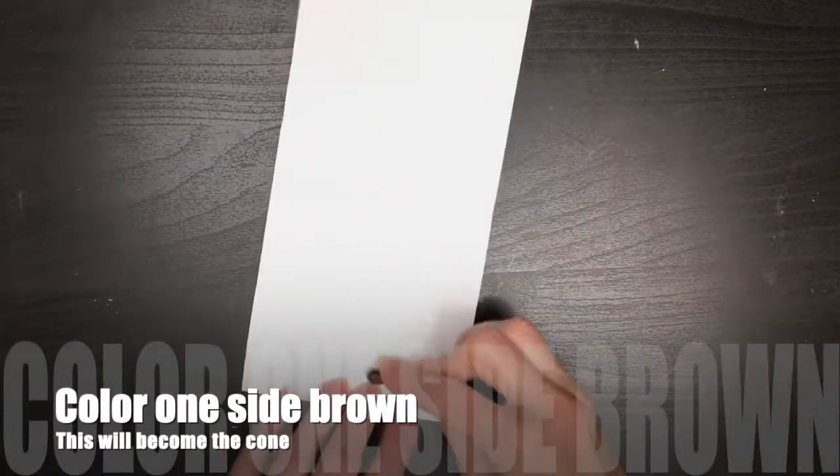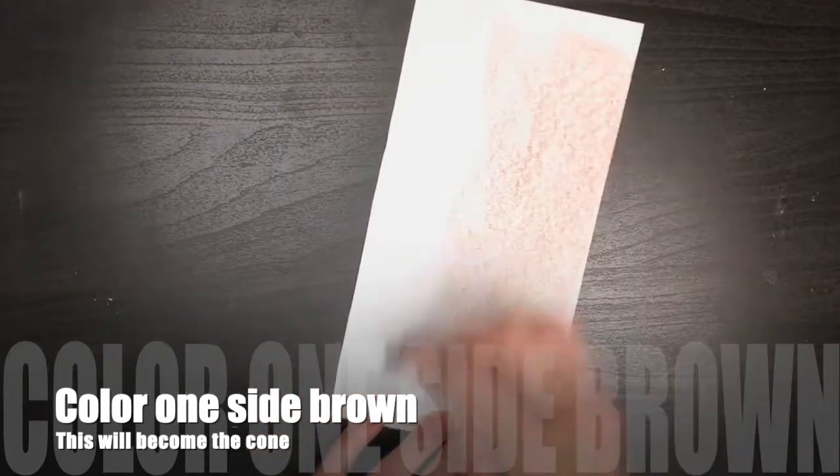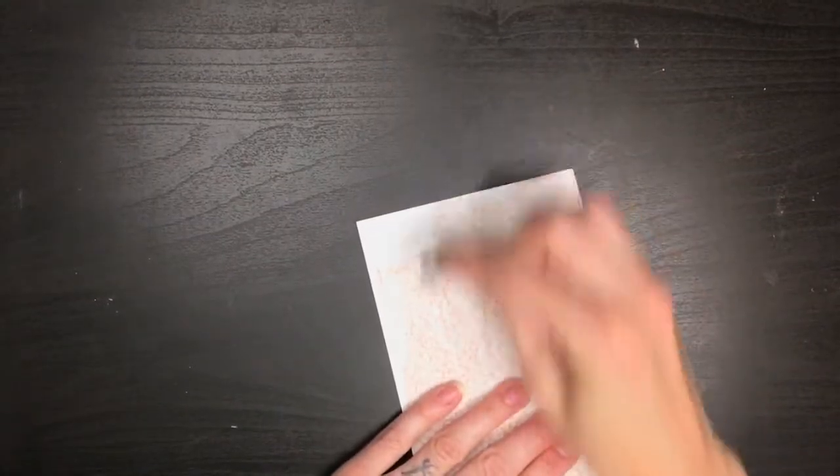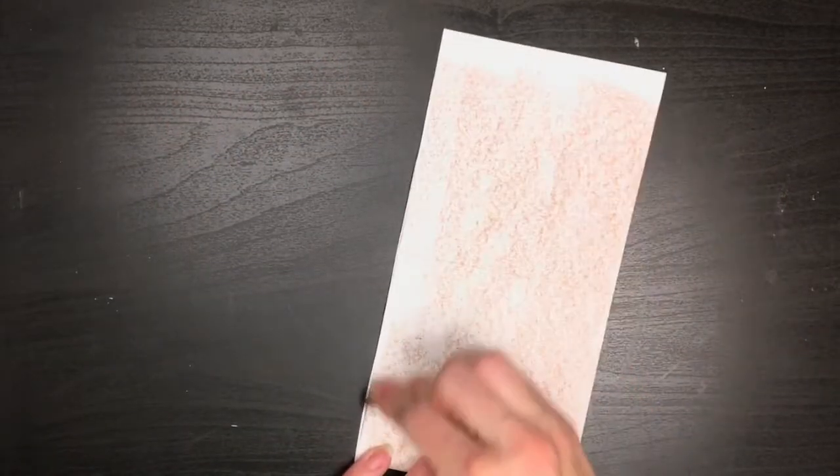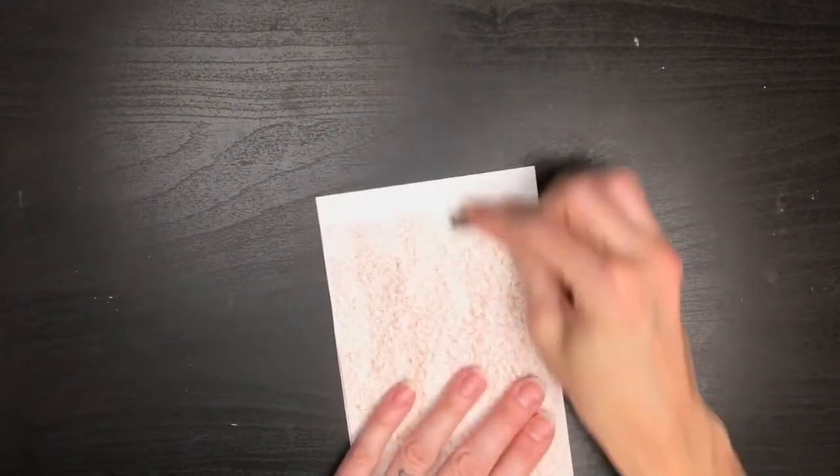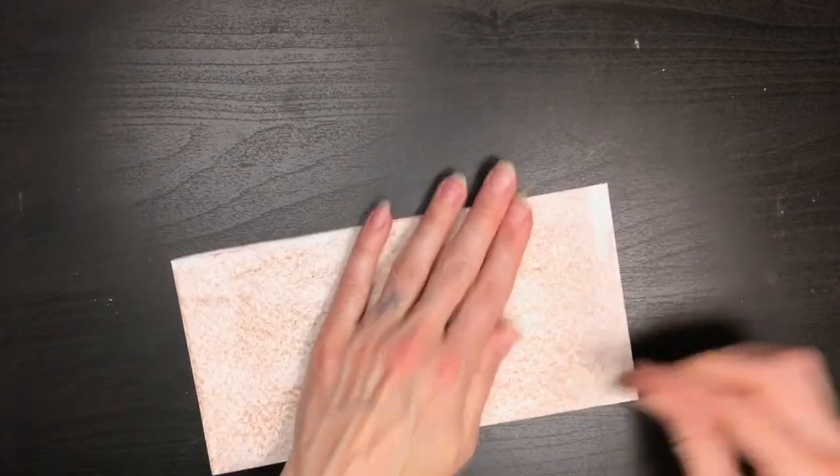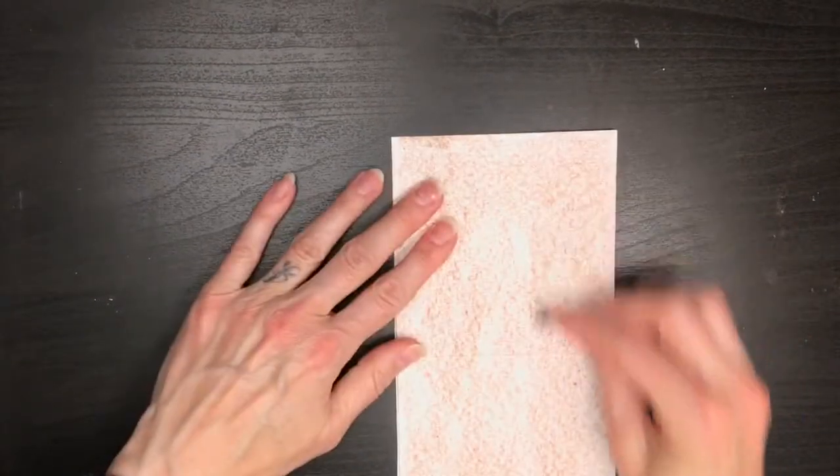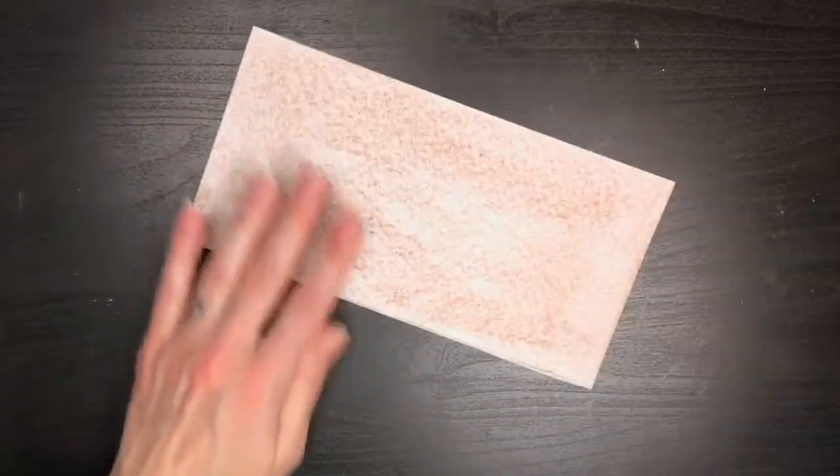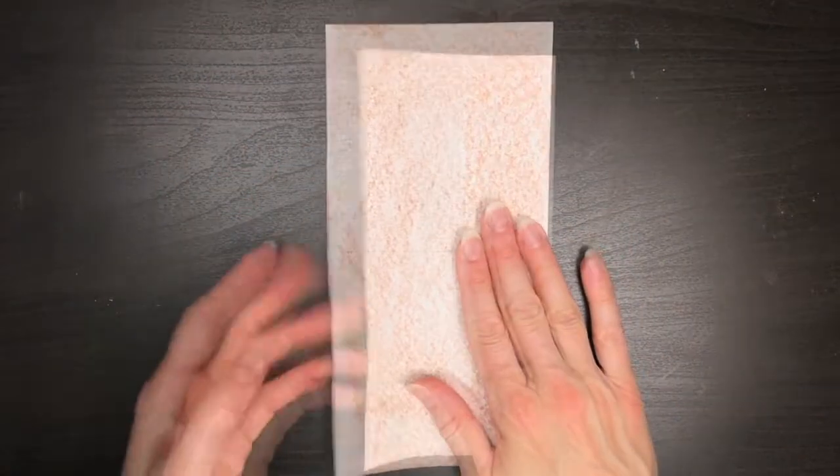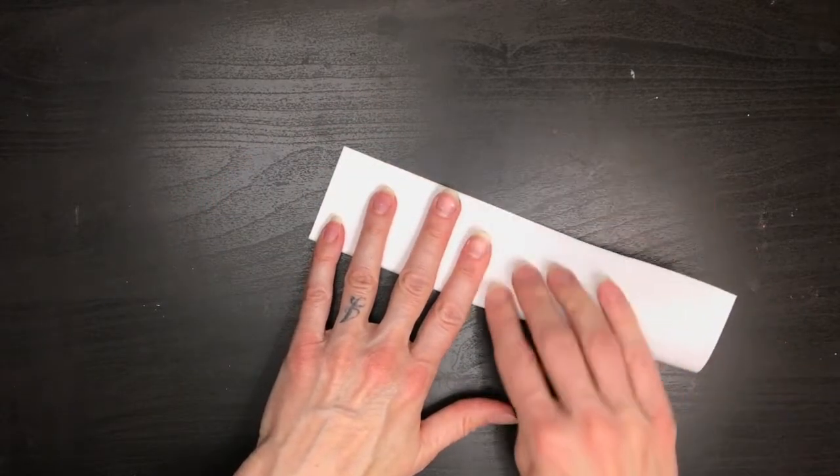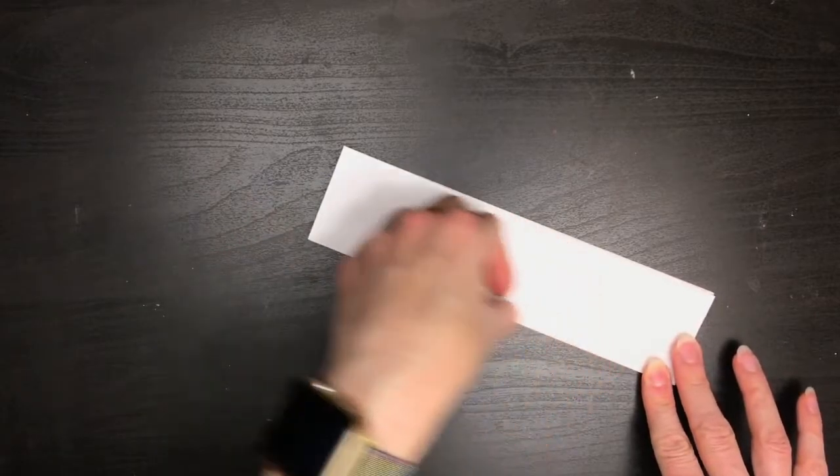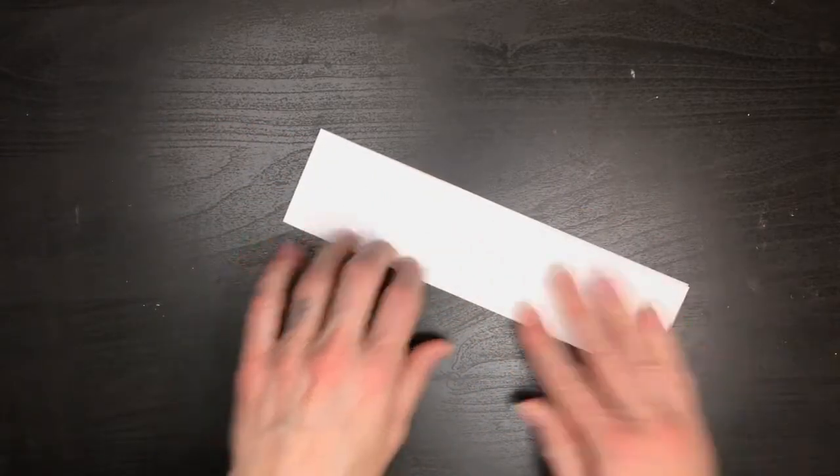So, now I'm going to take this paper and I'm going to color one side of it brown. Since this is going to be my ice cream cone, I want it to be brown on one side, which will eventually be the brown of the ice cream cone itself. So, I'm using a crayon that doesn't have a wrapper. I'm just sort of rubbing it across to make a brown side to my paper.